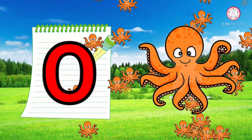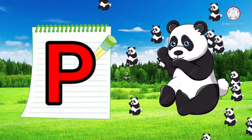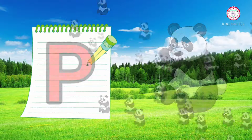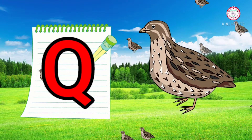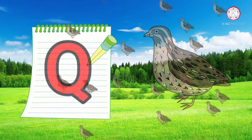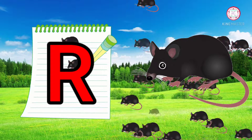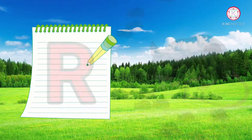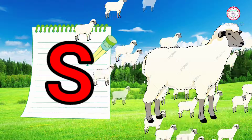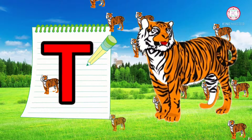O. O for octopus. P. P for panda. Q. Q for quail. R. R for red. S. S for sheep.